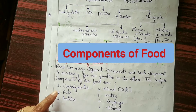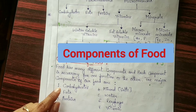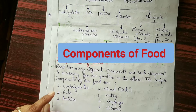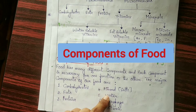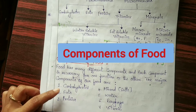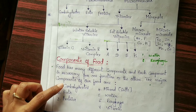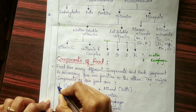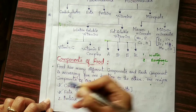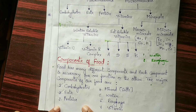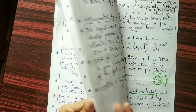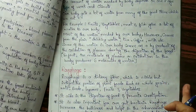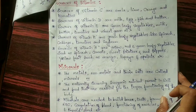In the previous video I discussed the components of food — we have carbohydrates, fats, proteins, minerals, water, roughage and vitamins. In the previous video I was discussing carbohydrates and fats, so now I will continue with proteins.